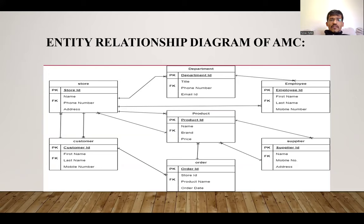We make the relations between store and department as one to many, from department to employee one to many, from store to employee one to many, from product to supplier one to many, from product to order many to one, and from customer to order one to many. In between store and customer, we make the relation many to many, and we convert that many-to-many relationship into two one-to-many relationships between store and customer, as well as store and product.